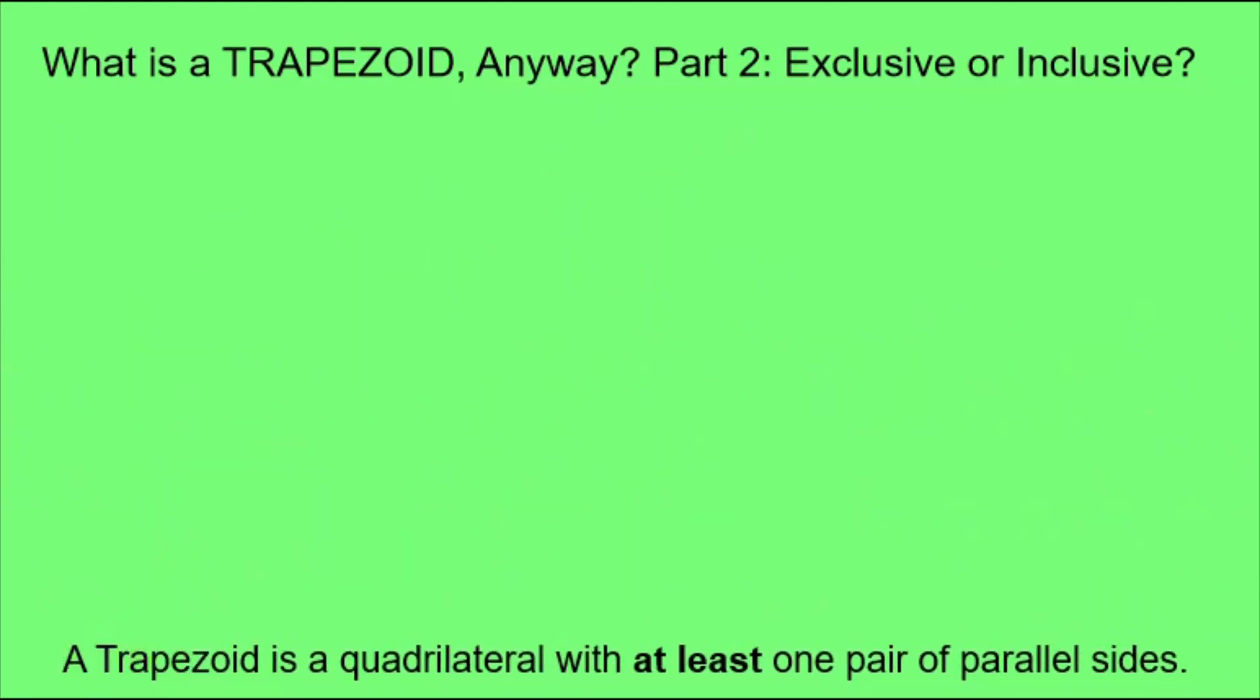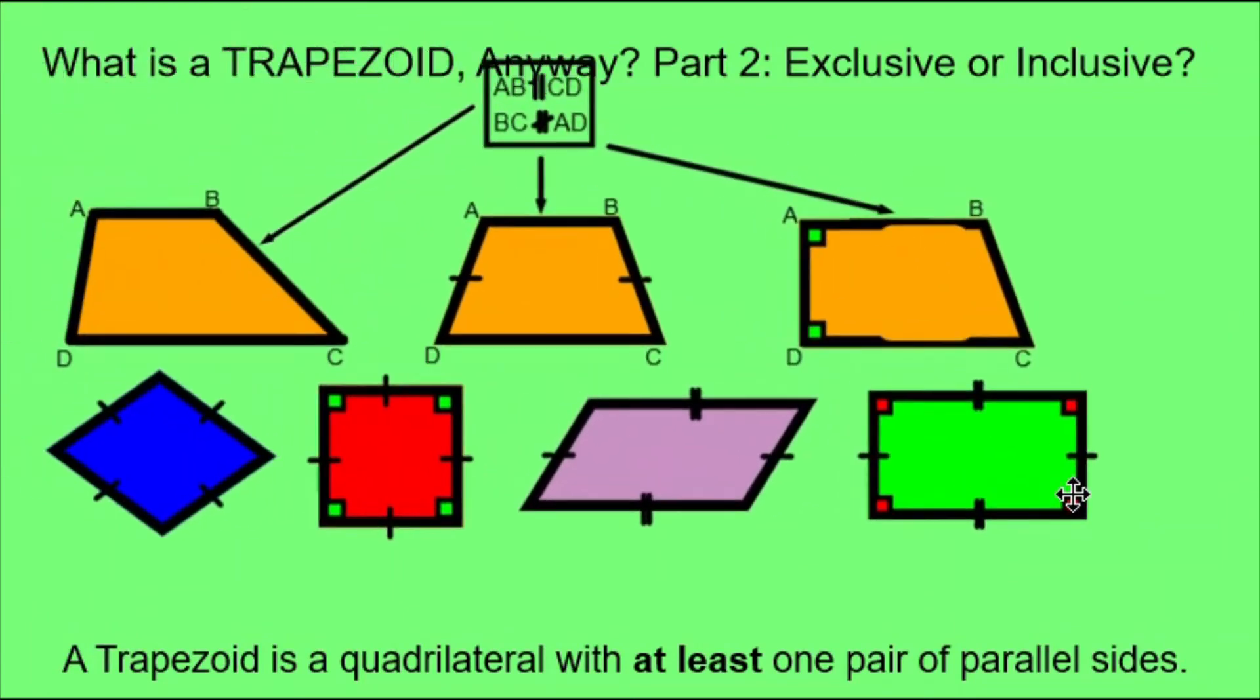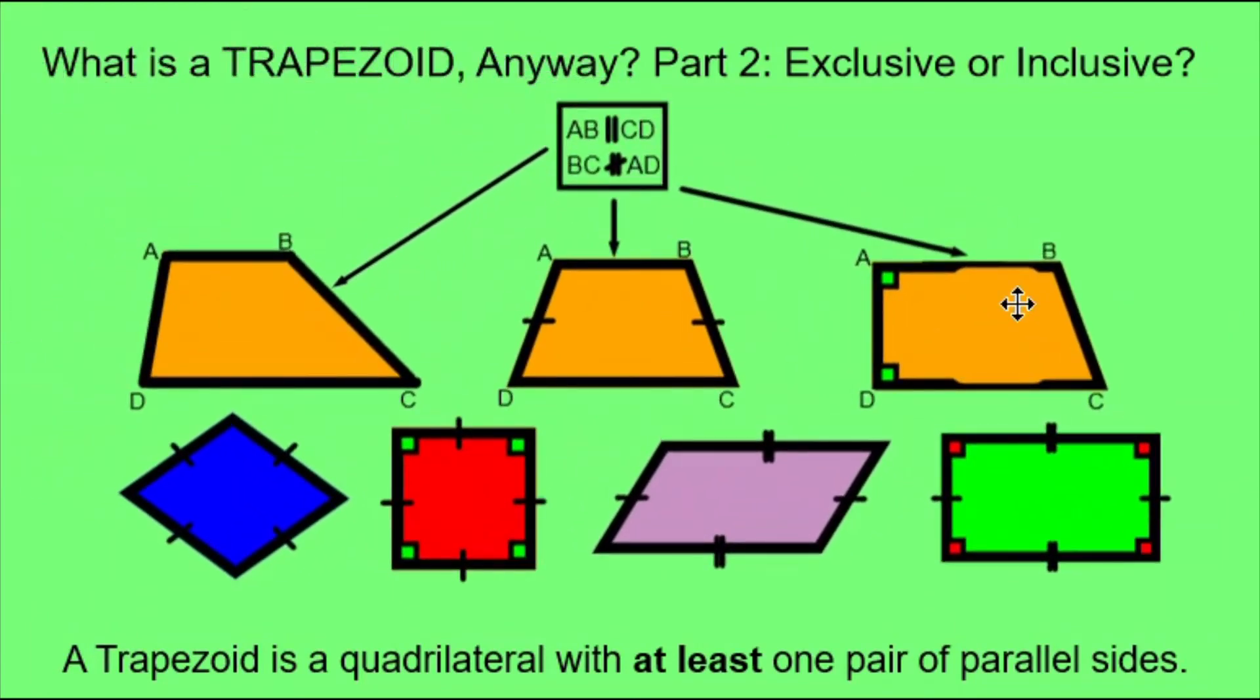This diagram is no longer useful. I'm going to use this diagram instead. The top part of the diagram is the same, of course, but what we see here is I'm also including a rhombus, a square, a parallelogram, and a rectangle, because all four of these other shapes also have at least one pair of parallel sides. So by the inclusive definition of a trapezoid, all of these shapes are trapezoids.